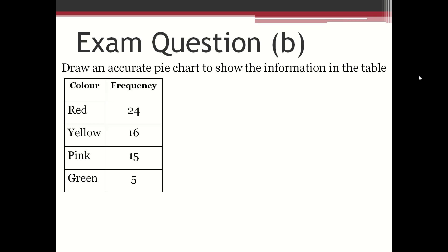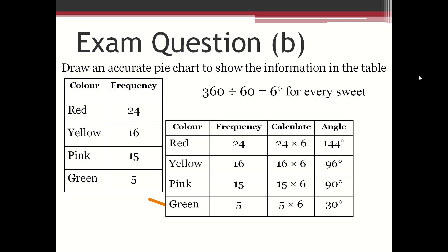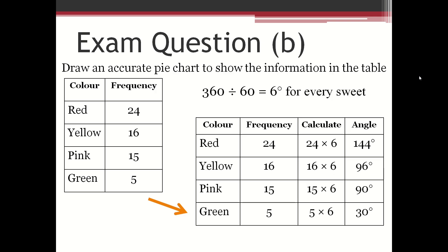So 360 divided by the total frequency, which is 60, is 6 degrees for every sweet. You can draw two extra columns next to the table that they give you in the question.